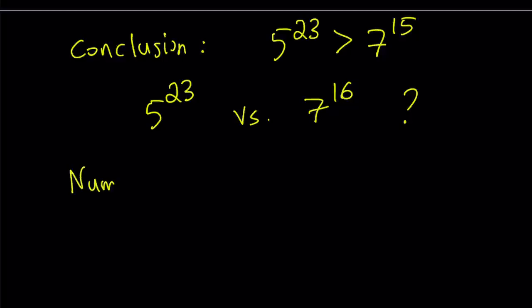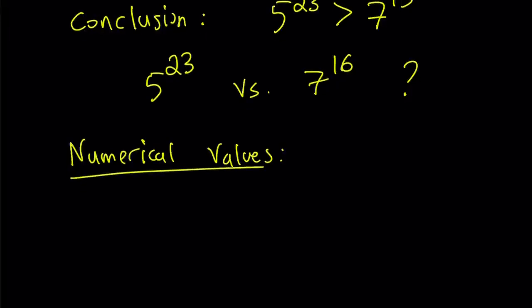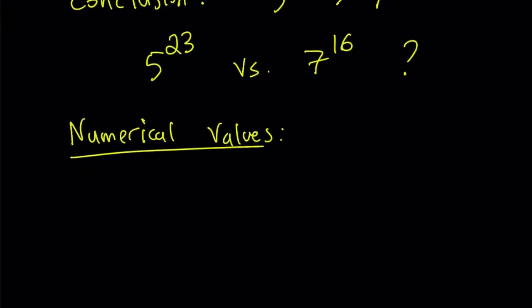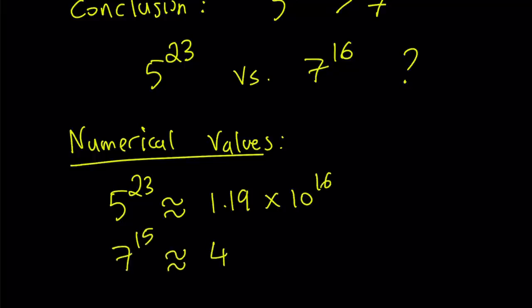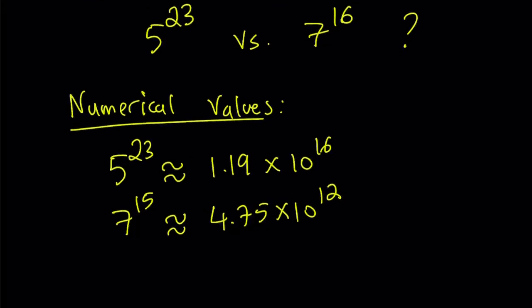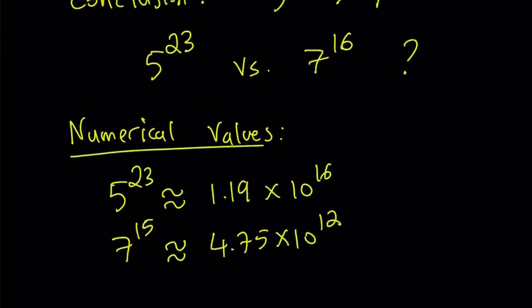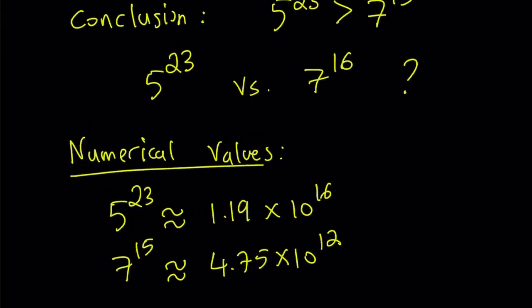Let's talk about numerical values to conclude. These numbers are actually very much apart — they're not really close. If you evaluate them, approximately 5 to the power 23 is going to be 1.19 times 10 to the power 16, and 7 to the power 15 is going to be about 4.75 times 10 to the power 12. Obviously they are very different. But my question is: how can you prove that one is larger than the other without using a calculator? Ignore the numerical values and just think about this problem.